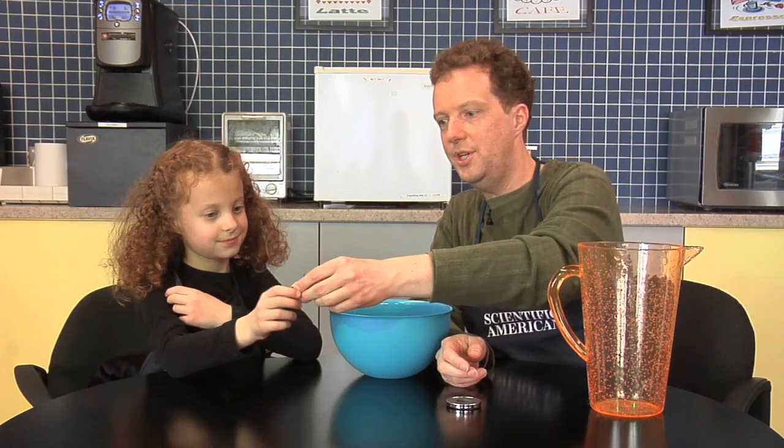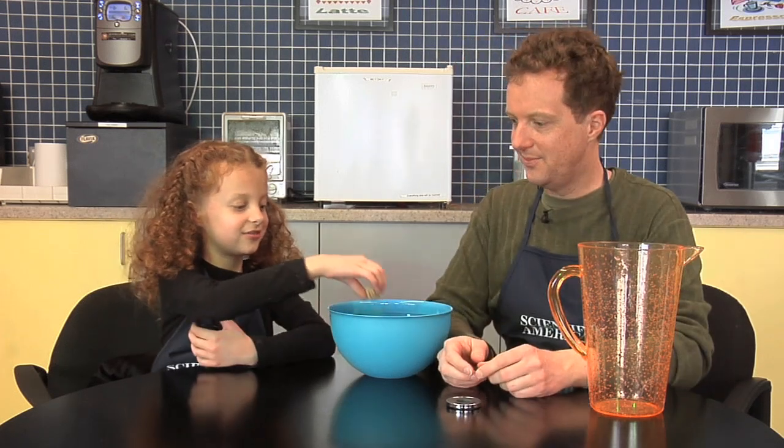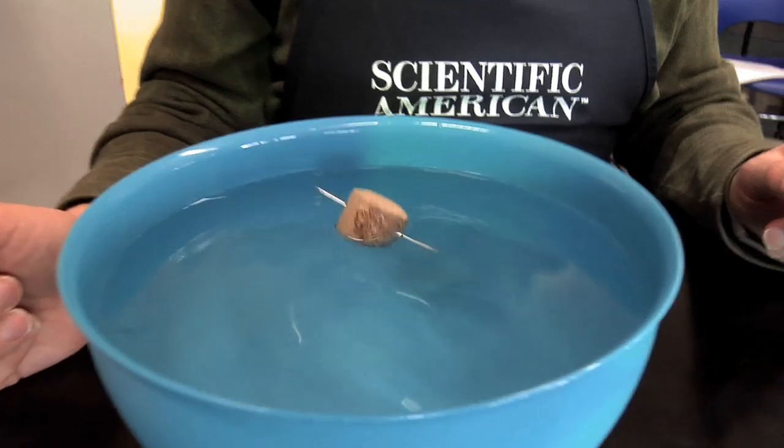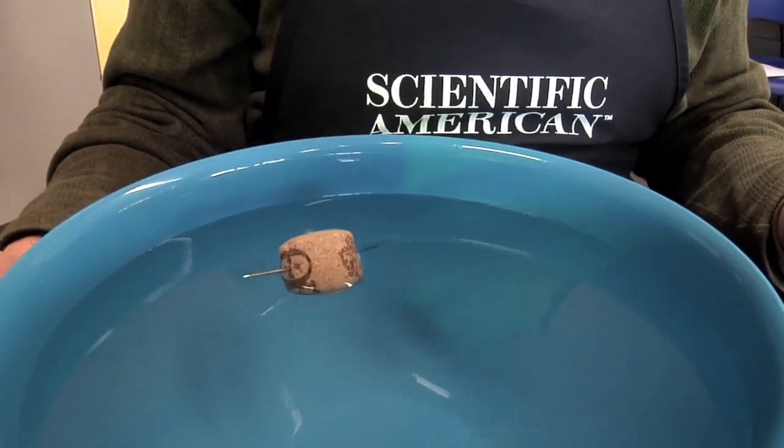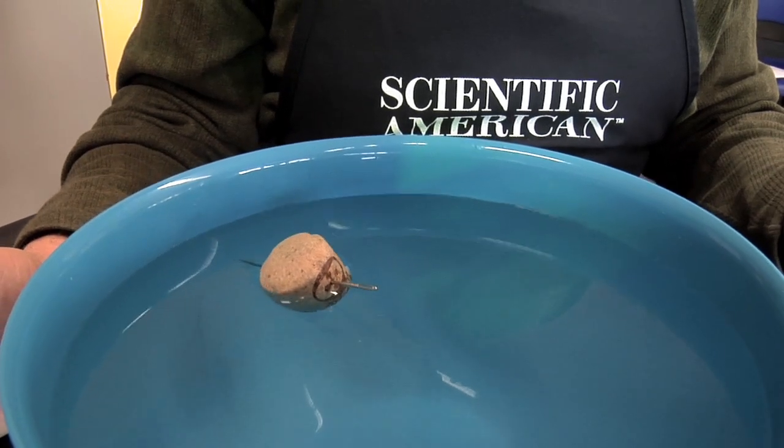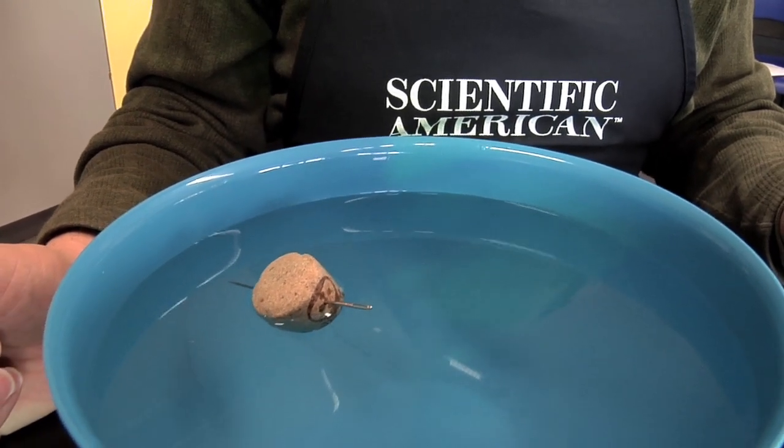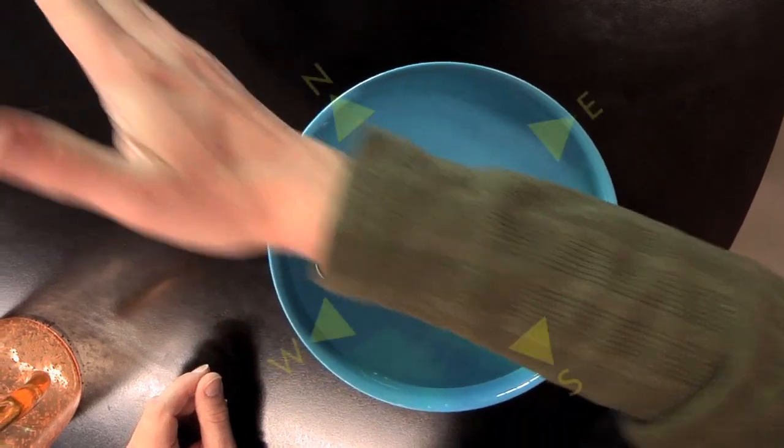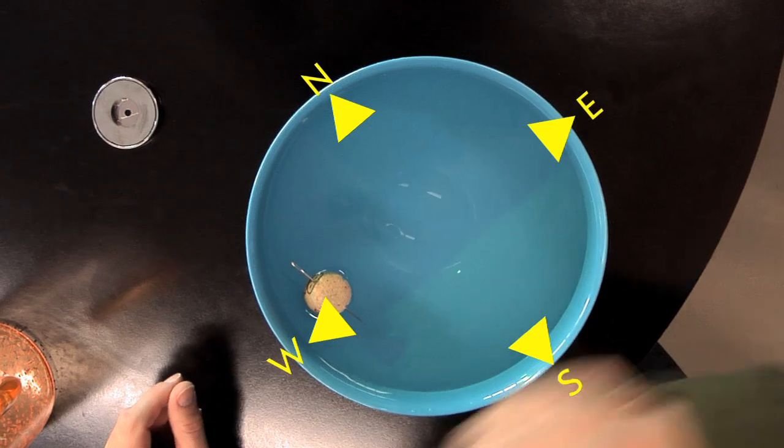Ellie, go ahead and put the needle and cork contraption into the water. And as you can see, the needle points roughly north-south toward what's called magnetic north. You can also use the compass to find the other directions: north, south, east, and west.